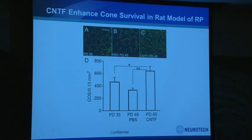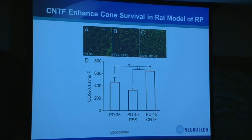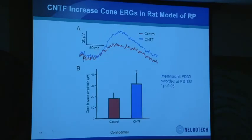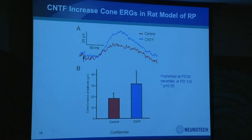In an animal model of rod and cone degeneration, by implanting devices that secrete CNTF, we were not only able to rescue the cone photoreceptors and their outer segments, but also able to preserve function — which is very critical. The ERG level in the treated group compared to the control shows this quite clearly.